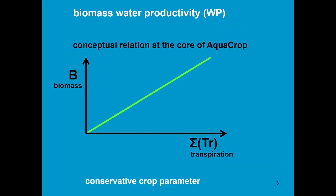The biomass water productivity is the conceptual relation at the core of AquaCrop. It is given by the slope of the line of the transpiration biomass curve.